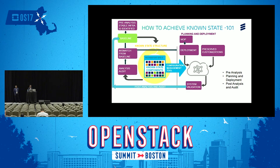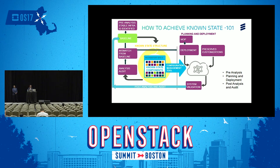We then move to the next phase: planning and deployment. In this phase, we basically do the development and deployment. Automation of the baseline is done for the deployment. Which automation tool to select depends upon the organization's needs and requirements — they can use any automation tool based on their requirements.